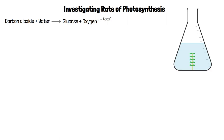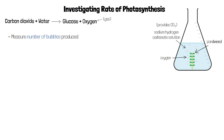An easy way to compare the volume of gas produced is to place a piece of pond weed in a sodium hydrogen carbonate solution. This solution has more carbon dioxide available for the pond weed to use than water. We then count the number of bubbles of oxygen produced by the pond weed in a given time, for example one minute. The more bubbles are produced, the higher the rate of photosynthesis.